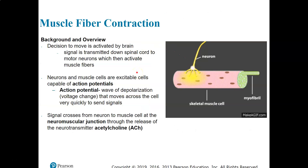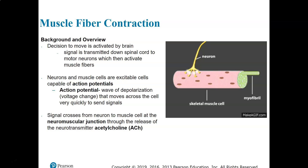This muscle fiber contraction is going to be triggered by the action of neurons in the case of skeletal muscles, and this is going to start in the central nervous system, usually in the brain. Every once in a while we get a spinal reflex that occurs just in the spine, but usually we have a conscious decision to move generated in the brain that's transmitted down the spinal cord to motor neurons that then activate the muscle fibers.